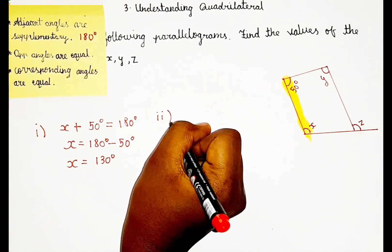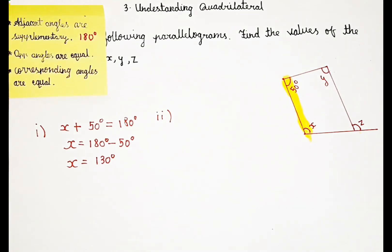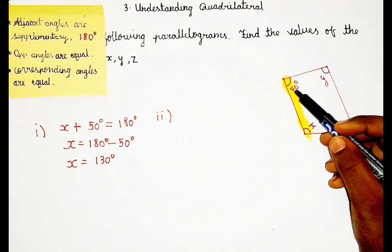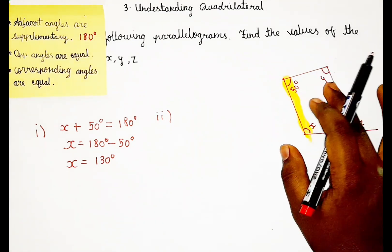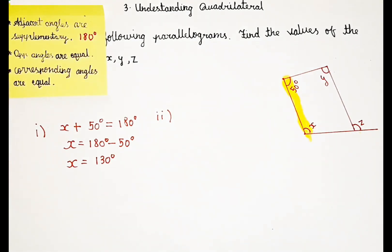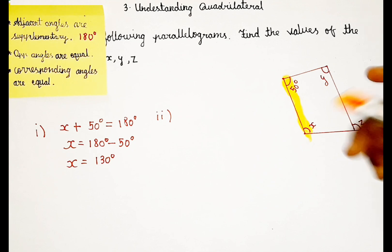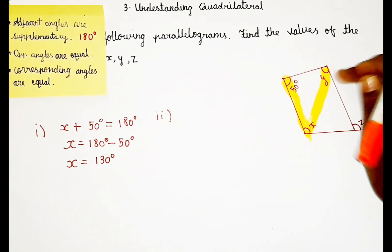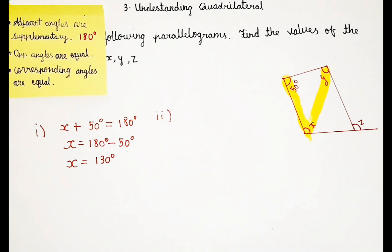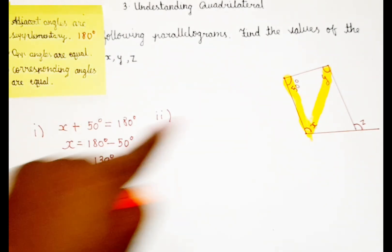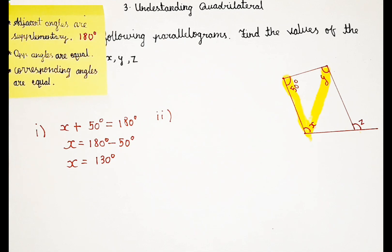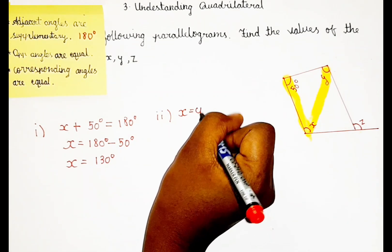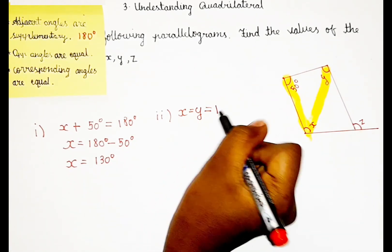Second subdivision: we are going to find y. There is another concept here. You can use the same adjacent angles method, but there is an easier way. We already know the value of x. Here we have x, and what is on the opposite side? Y. Opposite angles are equal, so x equals y equals 130 degrees.